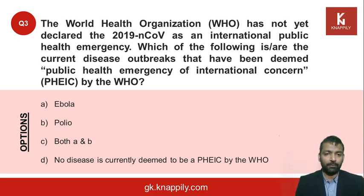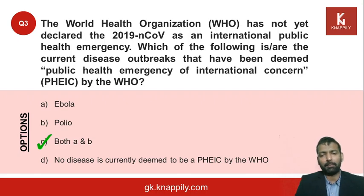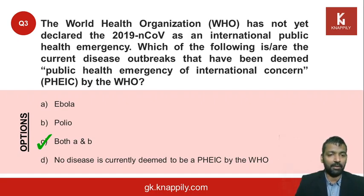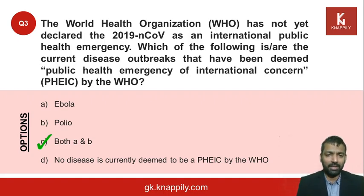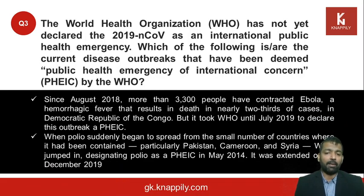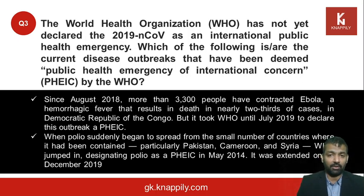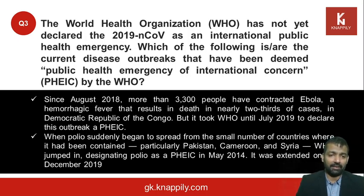The answer is both A and B — both Ebola and polio. You may have known about Ebola, which has been causing havoc in the Democratic Republic of Congo for the last couple of years. Polio is more surprising since it was supposed to have been eliminated, but around 2013-14 cases were rising again, especially in Pakistan, Cameroon, and Syria. In 2014, WHO declared it a PHEIC to stop it before it became a major international concern again.